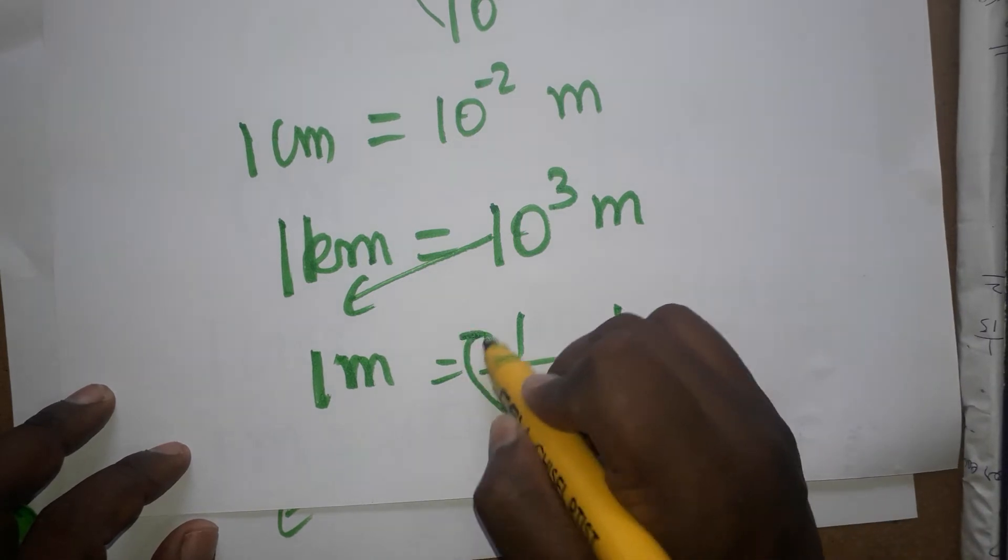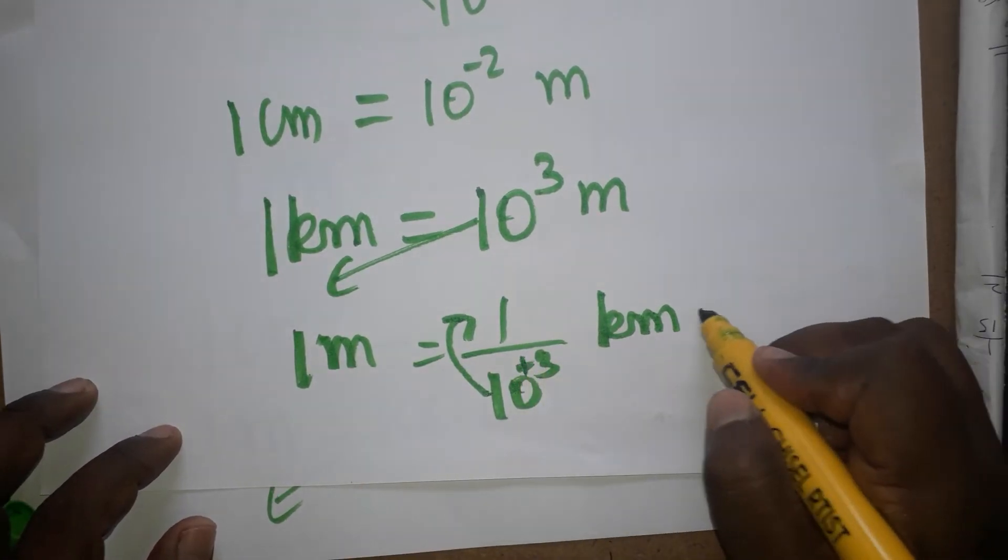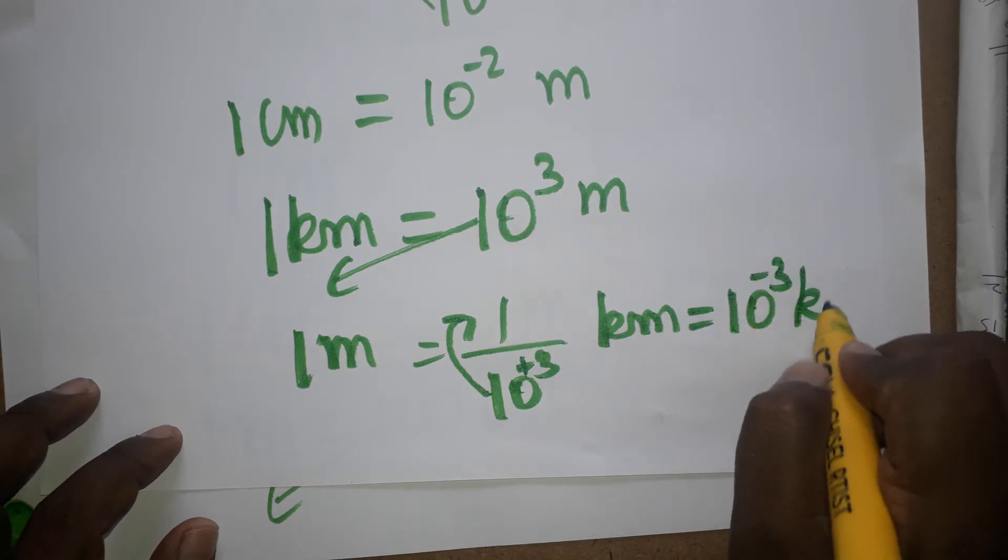From denominator I am taking as numerator. 10 power plus 3 is going to change to 10 power minus 3. So 1 m is 10 power minus 3 km.